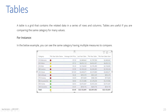Tables: A table is a grid that contains related data in a series of rows and columns. Tables are useful if you are comparing the same category for many values. For instance, in the example shown, you can see the same category having multiple measures to compare — such as last year's and this year's values side by side.